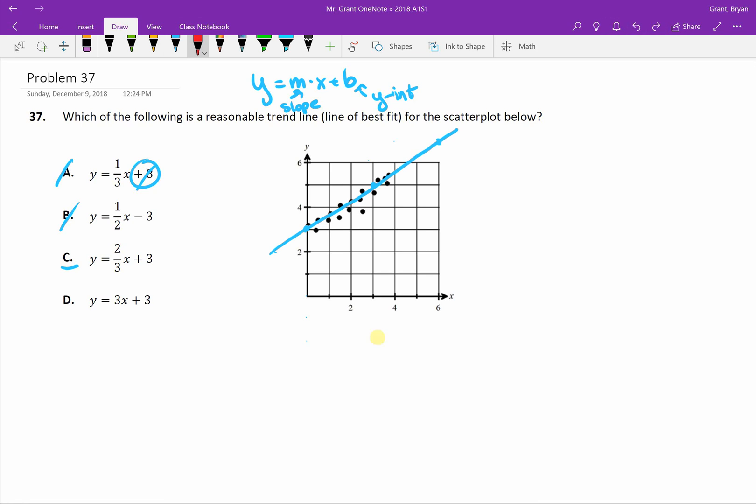D is also going to start at 3. But then it says go up 3 over 1. Up 1, 2, 3 over 1. Up 1, 2, 3 over 1. And that would be our line for D. I think we can hopefully all agree that C is the better line of best fit between those. And so C is our answer.